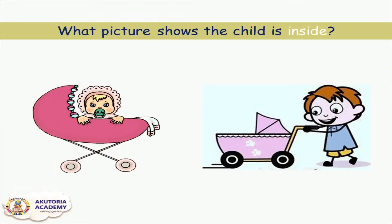What picture shows the child is inside? This picture by your left. You can see the child wearing a pink dress. She is inside the palm, but in the other picture, the child is pushing the pram. So the picture on your left shows that the child is inside.